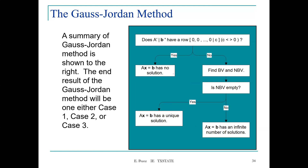A summary of the Gauss-Jordan method is shown to the right. The end result of the Gauss-Jordan method will be either case one, case two, or case three. Once you have completed the Gauss-Jordan method, you can use this flowchart to decide if you have a unique solution, an infinite number of solutions, or no solution. If you have a row with zeros to the left and a non-zero value on the right-hand side, then you have no solution. If not, find the basic and non-basic variables: if the non-basic set is empty you have a unique solution; if it is not empty you have an infinite number of solutions.